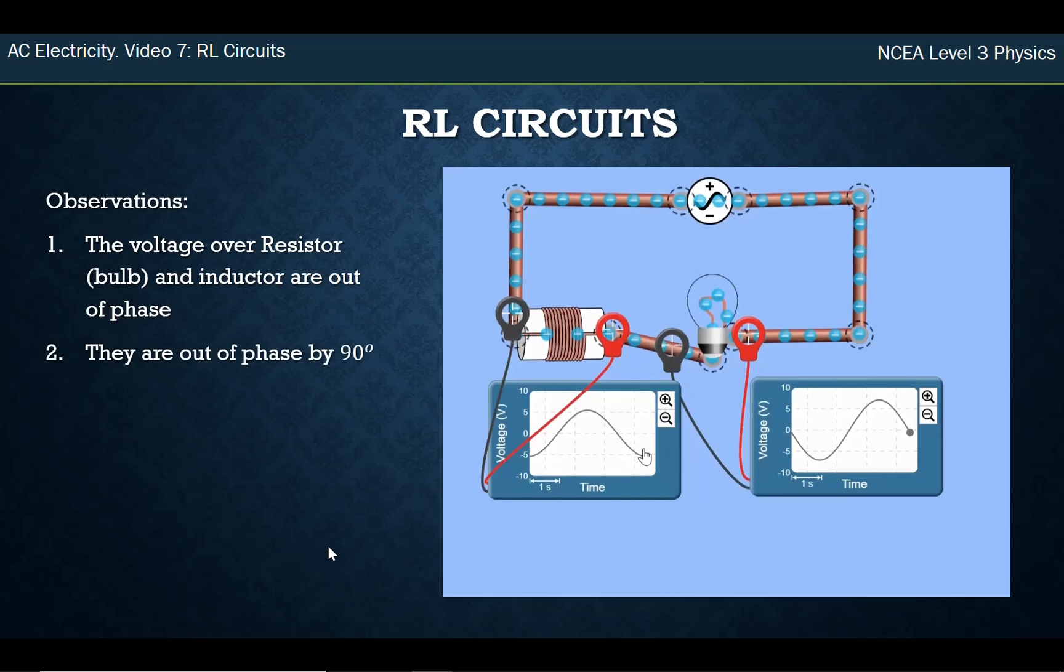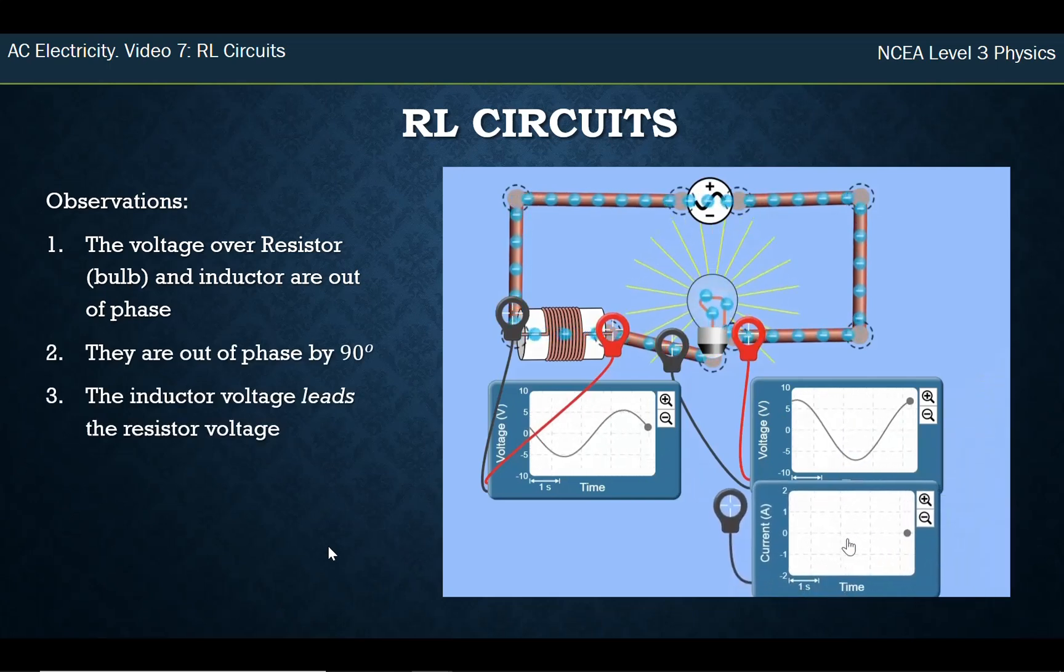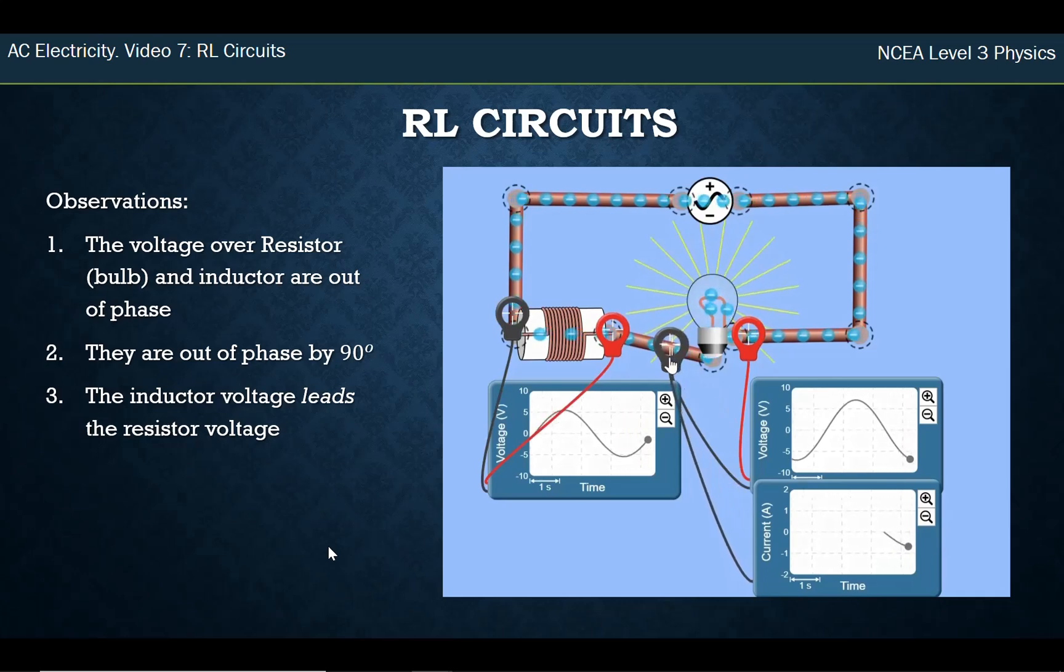So in this case we've got that they're out of phase by 90 degrees which is a quarter of a wave. The inductive voltage leads the resistance voltage and this is the current, and see the current is still in time with the resistor voltage.